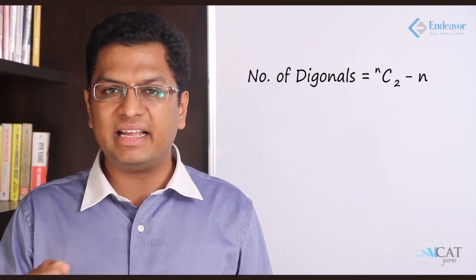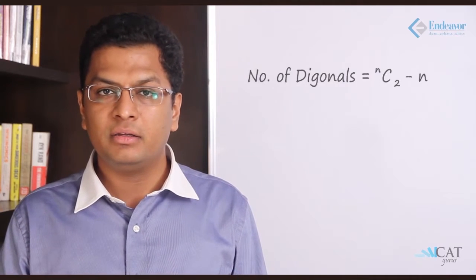What is the total number of diagonals in a polygon? That is nothing but nC2 minus n. In the case of a triangle, there are no diagonals. For a square, 4C2 minus n gives 6 minus 4, which equals 2. So the total number of diagonals in a square is 2. This is how we calculate the total number of diagonals in any polygon.